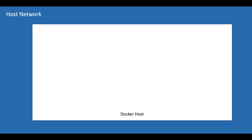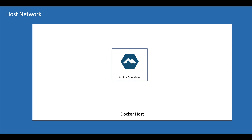The third network we have is the host network. When you create a container in the host network, you can access anything from this container. As a practice, you can create an Alpine container in the host network and try to access different containers and external resources like google.com to verify whether you are able to access everything from this container.